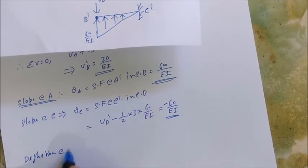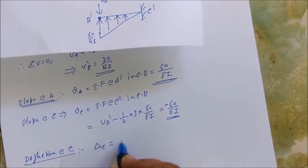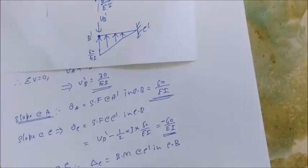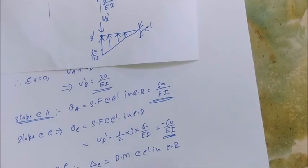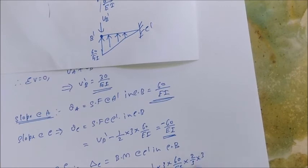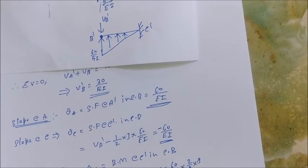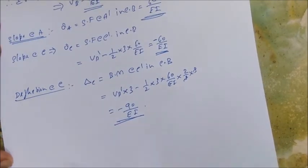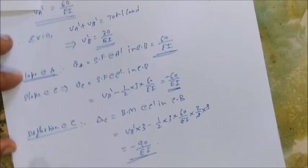Finally, deflection at C: delta_C equals the bending moment at C' in the conjugate beam. delta_C = V_B' × 3 − (1/2 × base × height × CG distance) = (30/EI × 3) − (1/2 × 3 × 60/EI × 2/3 × 3) = 90/EI − 90/EI... correcting: the result is −90/EI. This is the deflection at C. This is how we solve the overhang beam problem using the conjugate beam method. Thank you.